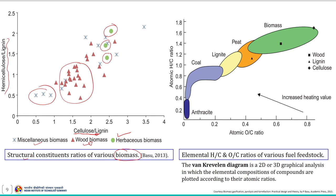Similarly, this schematic compares the H/C and O/C ratios of various fuel feedstock. Looking at the biomass samples only: cellulose shows relatively higher O/C and H/C ratios compared to woody material, and lignin has relatively low O/C and H/C ratios compared to cellulose and woody biomass.